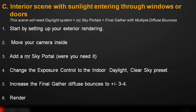Let's review the steps. First of all, this scene will need a daylight system, mental ray sky portals, and final gather with multiple diffuse bounces. We're going to start by setting up the scene as we did in the previous tips and tricks on exterior rendering — making sure there's a daylight system, the exposure is adjusted properly, the mental ray physical sky shader is in the environment, and final gather bounces are turned on.